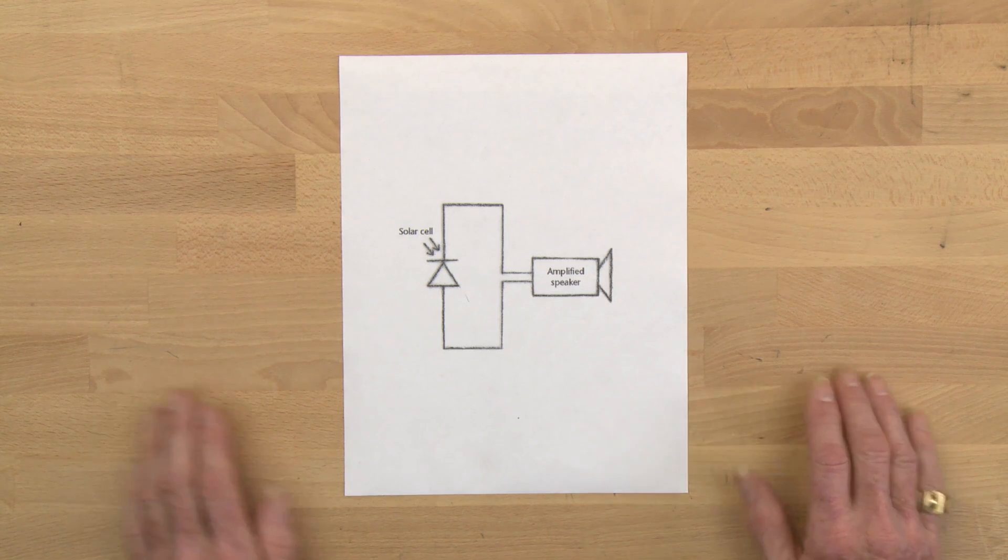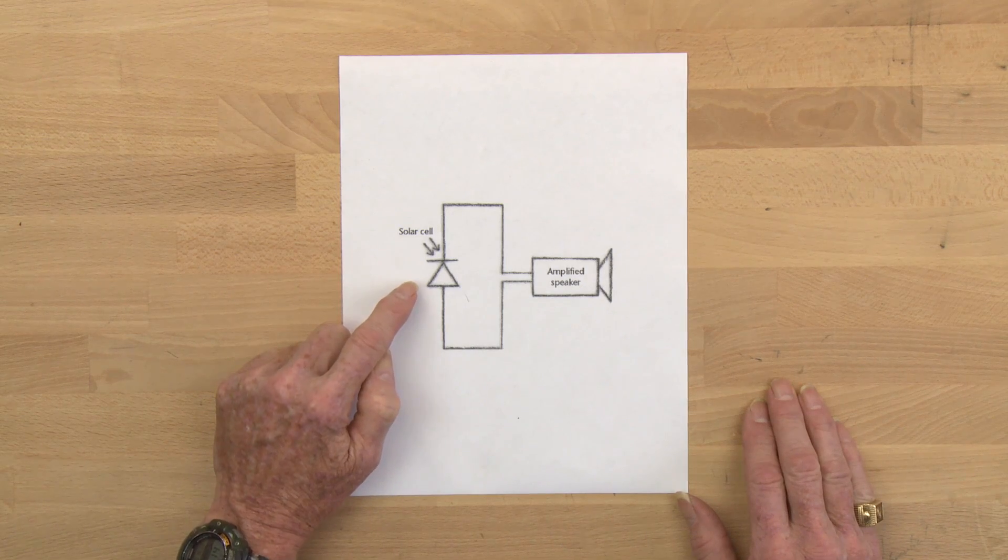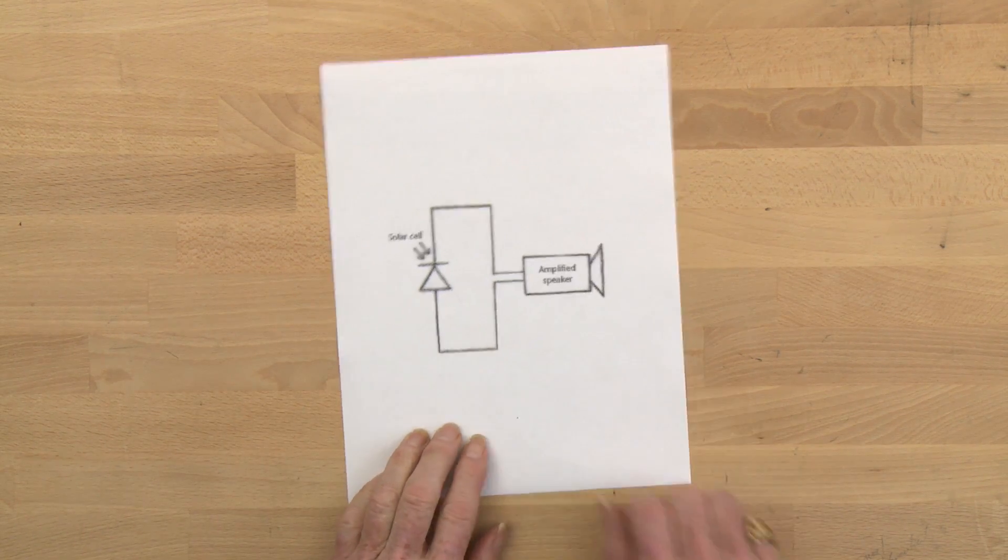We're going to start by building the receiver system that takes the light into the solar cell, turns it into an electrical current, and goes into the amplified speaker.